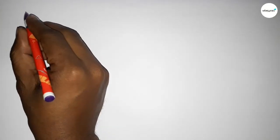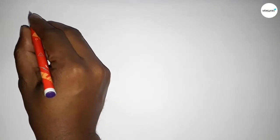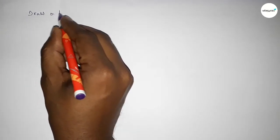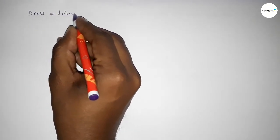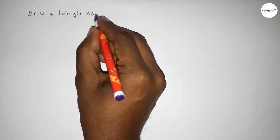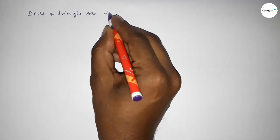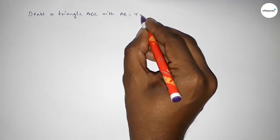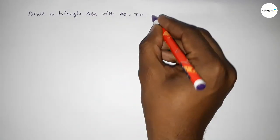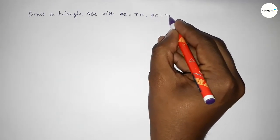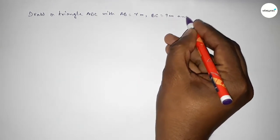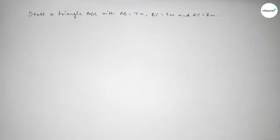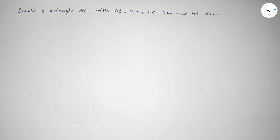Hi everyone, welcome to SI Share Classes. Today in this video we have to draw a triangle ABC with AB equal to 7 centimeter, BC equal to 9 centimeter, and AC equal to 8 centimeter. So let's start the video.